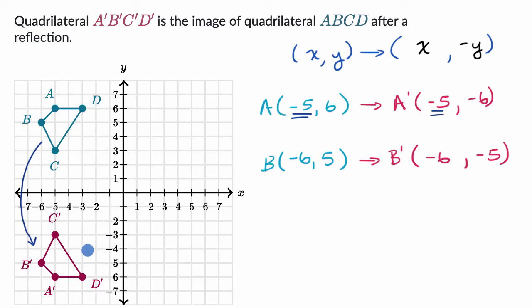And you can validate the other points if you like, but this should just make intuitive sense. The X coordinate stays the same, but the Y coordinate becomes the opposite.